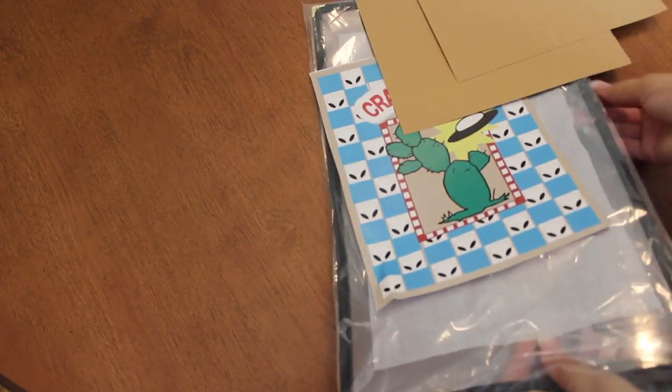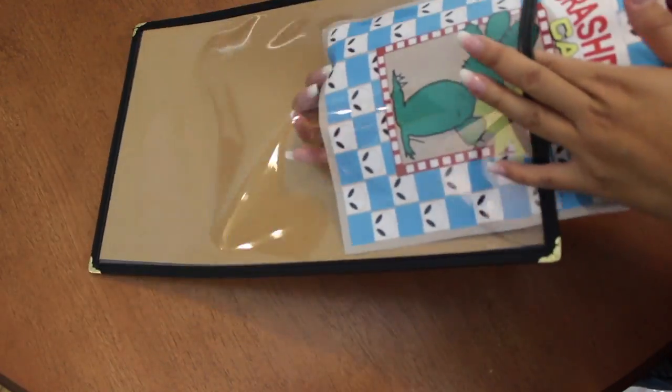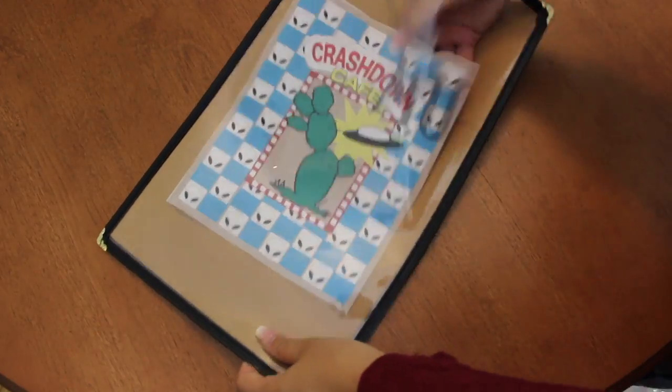So first things first, I'm going to put together the Crashdown Cafe menu. Since my paper isn't as big as the menu packet, I filled it in with construction paper. I printed out a Crashdown Cafe cover I found online, but if you want a more authentic feel, there are shops online where you can order a real replica menu.